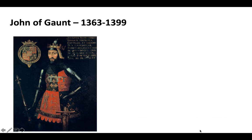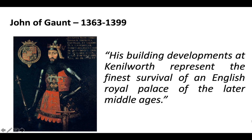Let's look at John of Gaunt first of all. Until the later stages of his life, John actually spent most of his time abroad fighting, but work continued at his residence at Kenilworth. Some people have suggested this work may have been in part to please his wife, who was pretty unhappy about John's well-known adultery in the 1370s. His building developments at Kenilworth have been described as representing the finest survival of an English royal palace of the later Middle Ages.